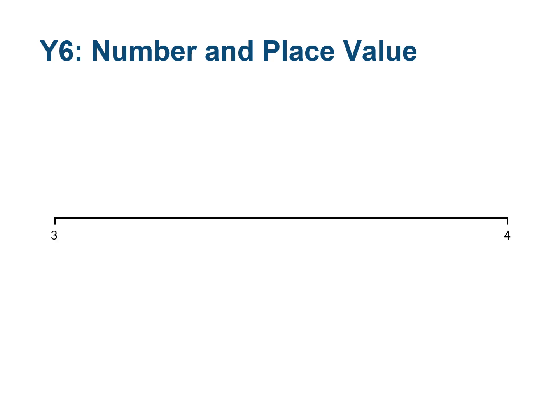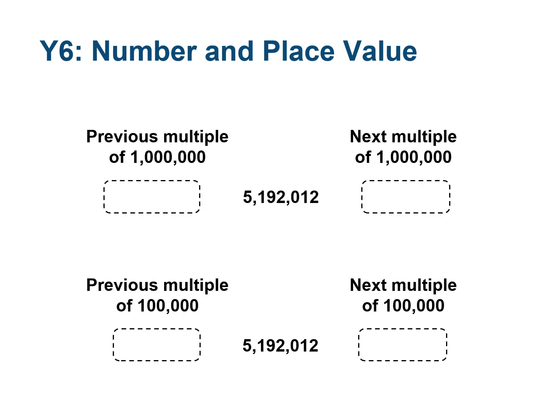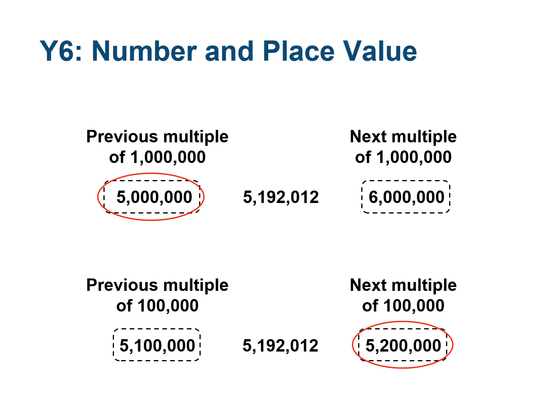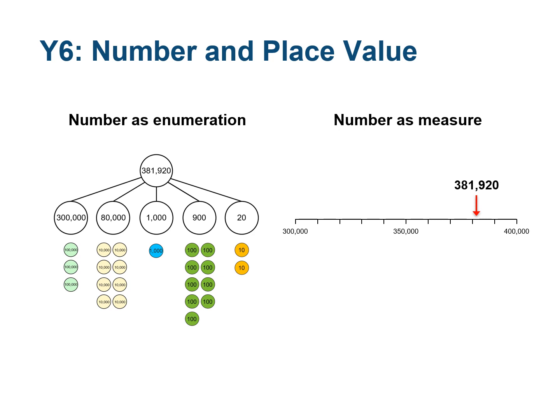As with partitioning numbers, pupils should be able to extend this understanding through the number system — for example, estimating the position of 3.42 in relation to 3 and 4. The midpoint of 3.5 is here, so 3.42 is about here. Pupils should also be able to identify previous and next multiples of powers of 10, which will allow them to round numbers to a reasonable degree of accuracy. For a seven-digit number, pupils should be able to identify the previous and next multiple of 1 million and of 100,000, and round to the nearer of these without relying on a number line. Pupils should understand that the purpose of rounding is to give an approximate value. Pupils will leave Year 6 understanding number as enumeration and number as measure, and be able to understand numbers through the number system, including decimal numbers, in both of these ways.